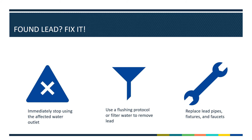If the testing results indicate elevated lead levels, then immediately stop using the affected water outlets. Next, notify school staff, parents, and students of test results and the actions being taken to remediate the problem. Use bottled water as a temporary solution as needed. Possible solutions can include using a flushing protocol to regularly flush water pipes to eliminate stagnant water, filtering the water, or replacing lead pipes, fixtures, and faucets.